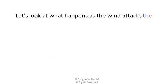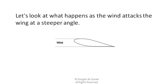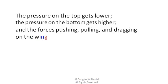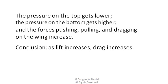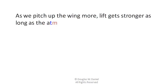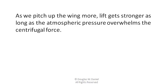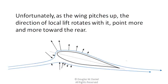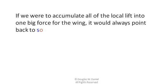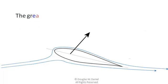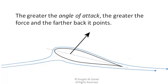Let's look at what happens as the wind attacks the wing at a steeper angle. The pressure on the top gets lower, the pressure on the bottom gets higher, and the forces pushing, pulling, and dragging on the wing increase. As lift increases, drag increases — but caution: lift does not always increase as drag increases. As we pitch up the wing more, lift gets stronger as long as the atmospheric pressure overwhelms the centrifugal force. Unfortunately, as the wing pitches up, the direction of local lift rotates with it, pointing more and more toward the rear. The greater the angle of attack, the greater the force and the farther back it points.